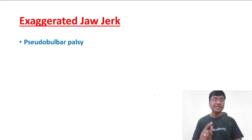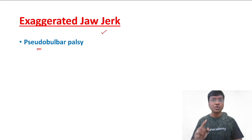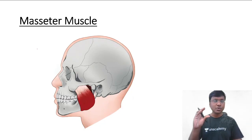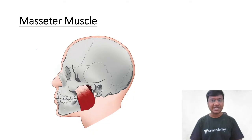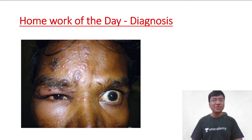Another important MCQ: in which clinical scenario is the jaw jerk exaggerated? The exaggerated jaw jerk is seen in patients with pseudobulbar palsy. It is called the masseter reflex because during jaw closure, it is the masseter muscle that contracts.